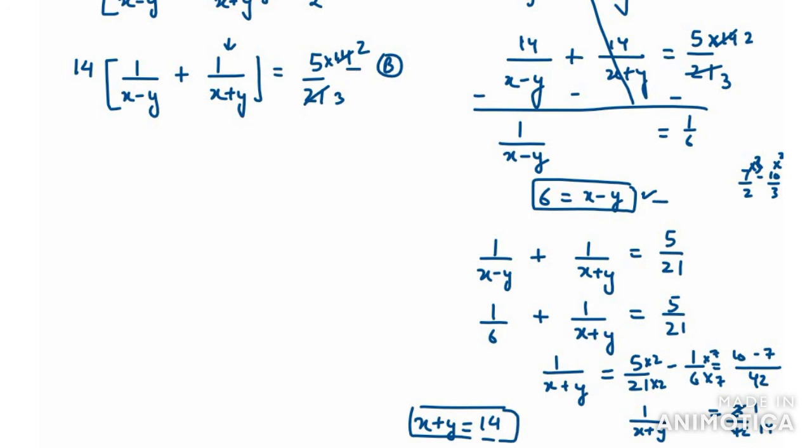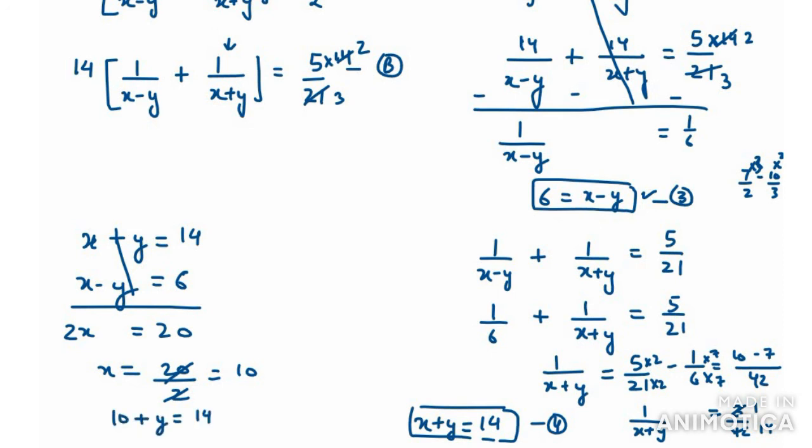Now we have two simple equations. Let's call them equation 3 and equation 4. To find x and y values, add equation 3 and 4: x minus y equals 6 and x plus y equals 14. Adding them, y cancels, giving 2x equals 20, so x equals 10. To find y, using equation 4: 10 plus y equals 14, so y equals 14 minus 10, which is 4.